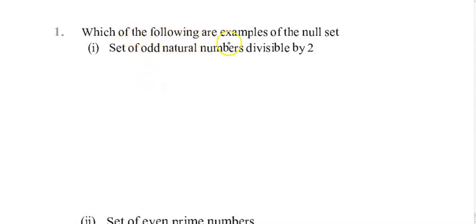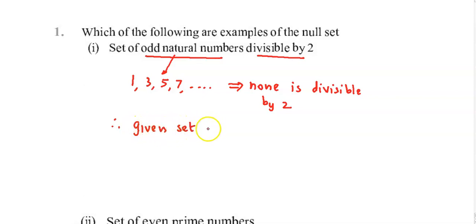Which of the following are examples of a null set? Set of odd natural numbers divisible by 2. Odd natural numbers are 1, 3, 5, 7 and so on, and none of them is divisible by 2. Therefore, the given set is a null set.